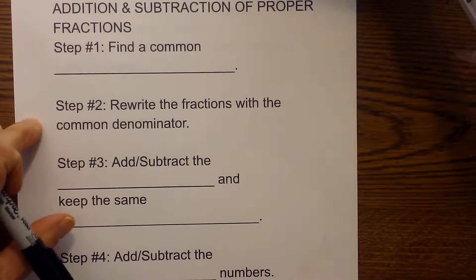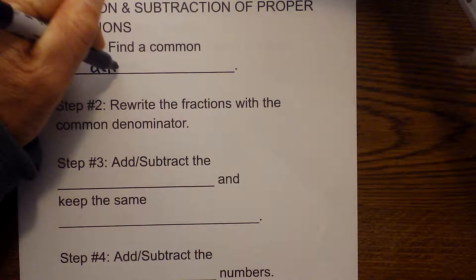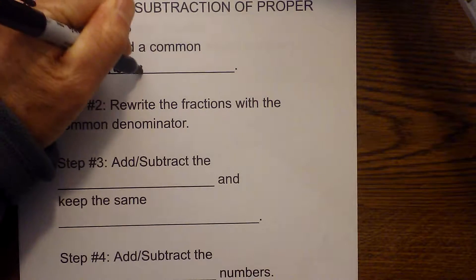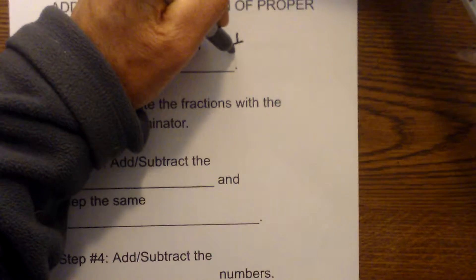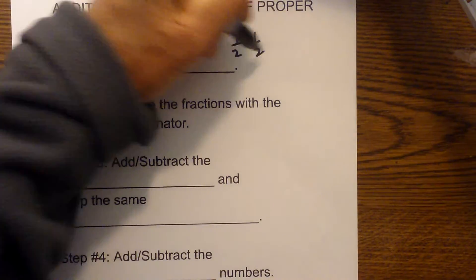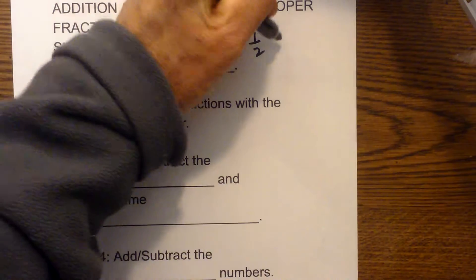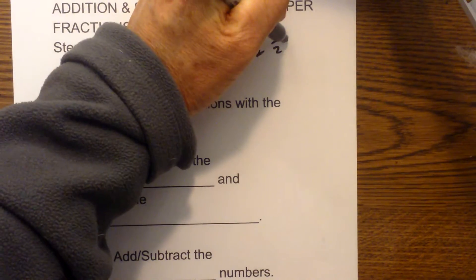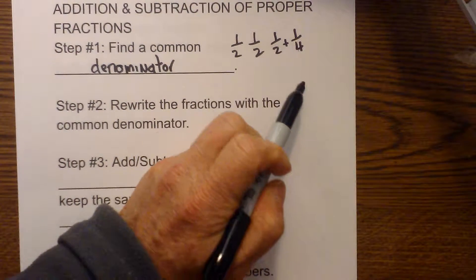Let's go through the steps and then I'll work a couple examples. Step number one is you find a common denominator. A common denominator is basically if you have two fractions, one half and one half, then this would be a common denominator because they are the same. If you have one half plus one fourth, this is not a common denominator and you have to find one.